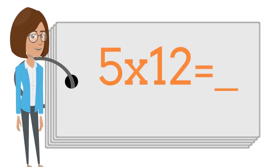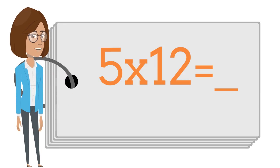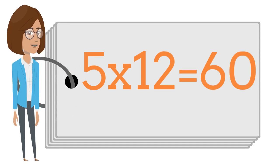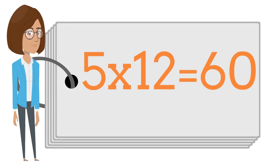Five times twelve is? Say the answer out loud. Five times twelve is sixty.